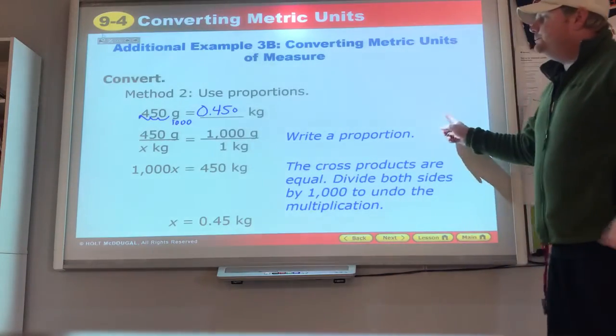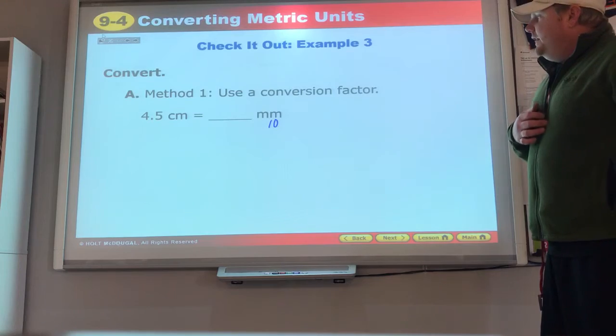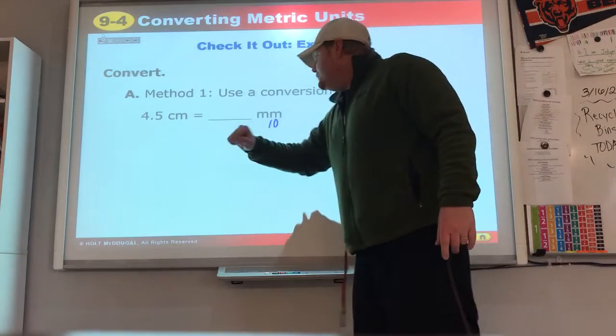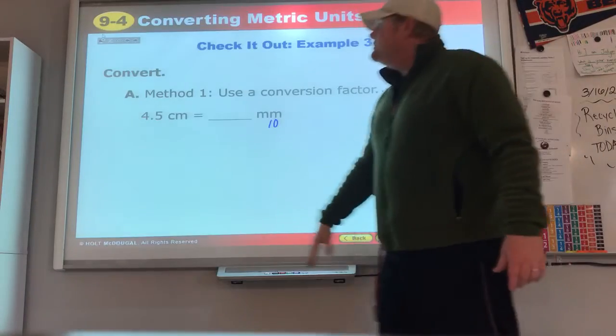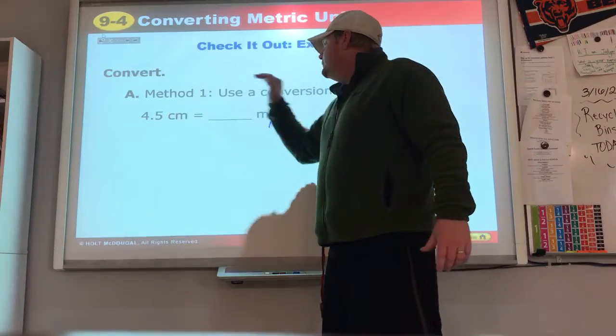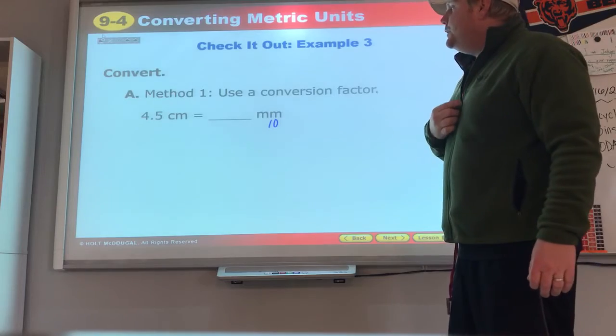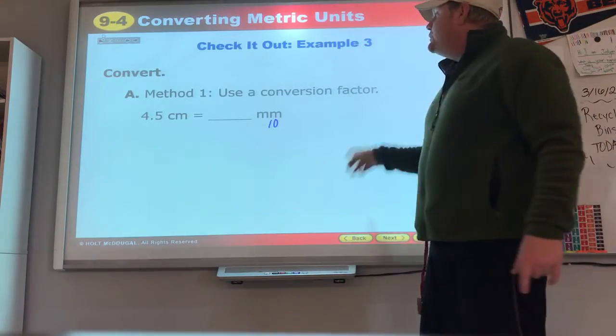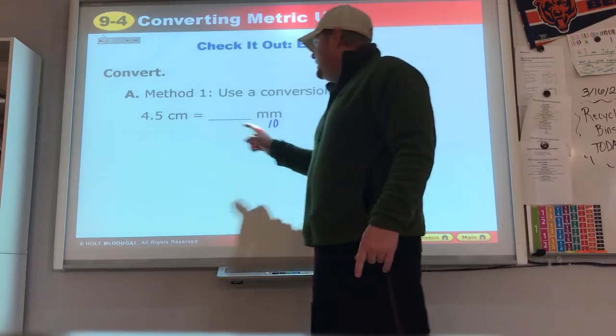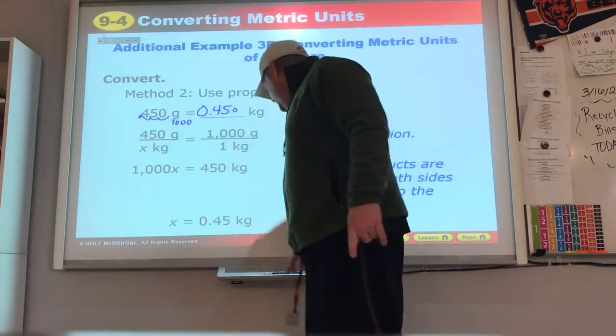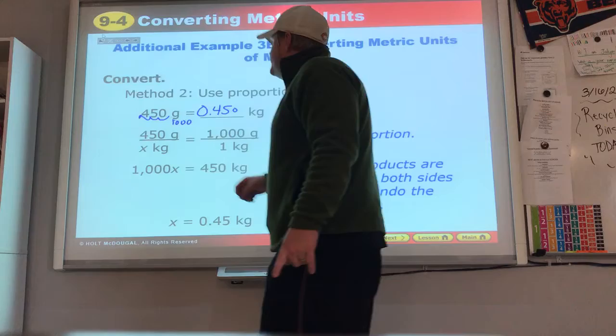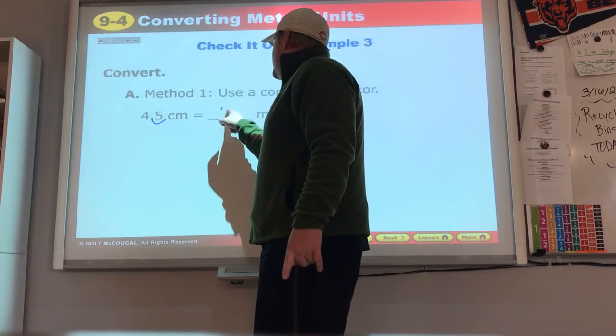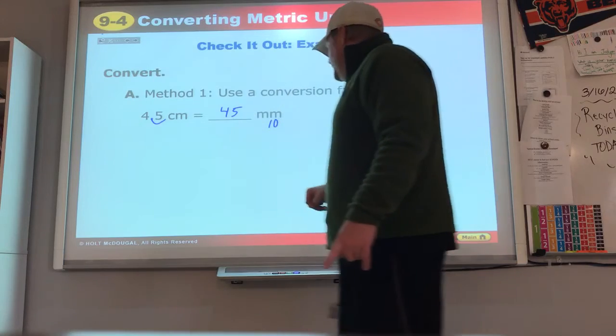Here again, a conversion factor. Let's think on our level. Centimeters to millimeters, something bigger to something smaller. Big to small means we're going to multiply. One centimeter equals 10 millimeters, so 4.5 times 10, move that decimal one place and we get 45 millimeters.